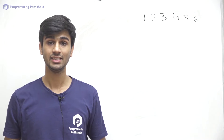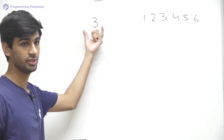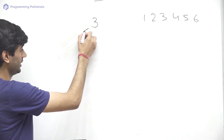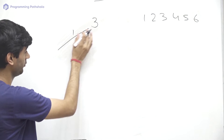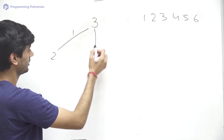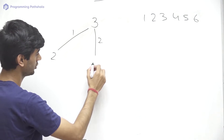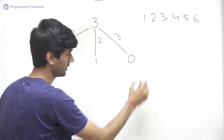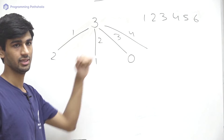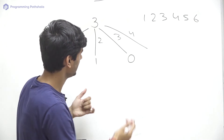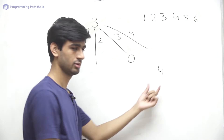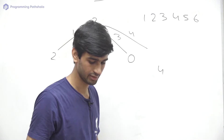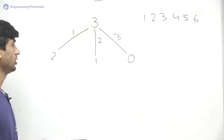Now let's take 3 as an example and find the number of ways to get a sum equal to 3. We throw the dice and we have six possible outcomes. If we get 1, the remaining value is 2. If we get 2, the remaining value is 1. If we get 3, the remaining value is 0. If we get 4, 5, or 6, those outcomes are of no use because we already exceed our target of 3, so we can skip them.